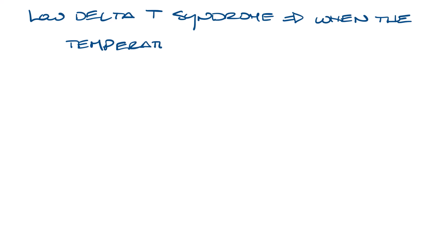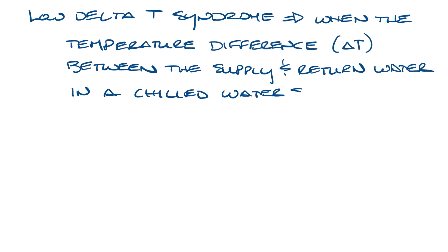Low delta T syndrome is when the temperature difference between the supply and return water in a chilled water system is too low.